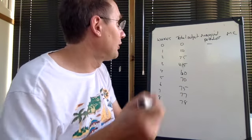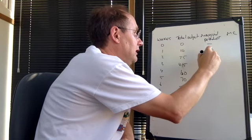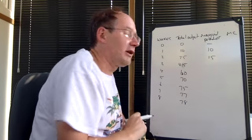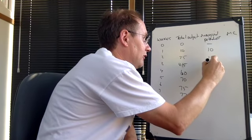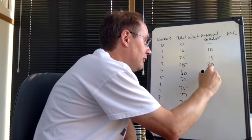Okay, and the first bit is very straightforward. The marginal product of the first worker is 10. The second one is 15 because it's 25 minus 10. The third one is 45 minus 25, which is 20. The fourth one is 60 minus 45, which is 15.